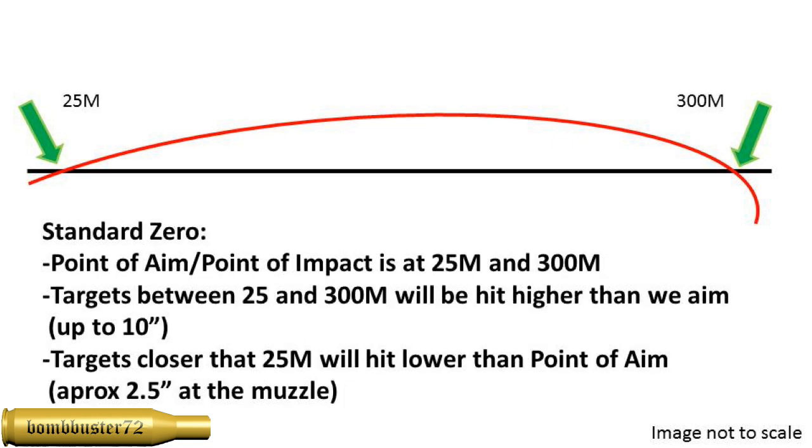With standard zeroing methods, our point of aim and point of impact is at 25 meters, and then again at 300 meters. Targets in between 25 and 300 meters will be hit higher than we're actually aiming, and this could be up to 10 inches higher. Anything closer than 25 meters, and we're going to hit lower than our point of aim. Now this shouldn't be any more than two and a half inches, because that's about what the distance is between our sights and the muzzle.